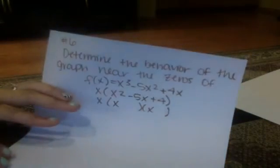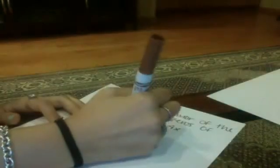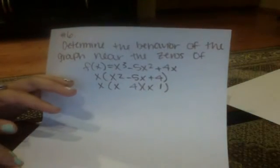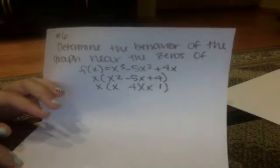You're going to leave the x on the outside, and then it's going to be x times x would make x². Then 4 times 1 we're going to use to make the +4 at the end. We're going to use a -4 and a -1 to equal -5.